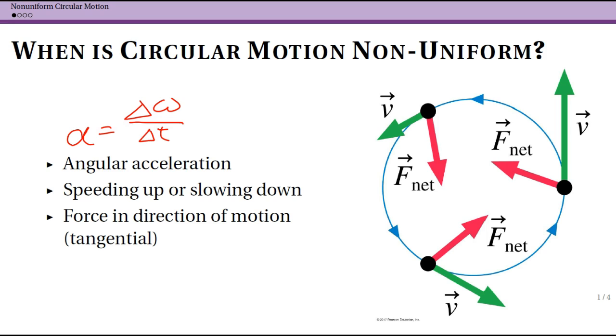So if you have an angular acceleration that is not equal to zero, then you have non-uniform circular motion, remembering that uniform circular motion had a constant angular speed. You're not normally going to be told explicitly that. You might instead be told that your object is speeding up or slowing down as it is traveling in a circle.